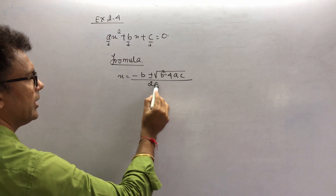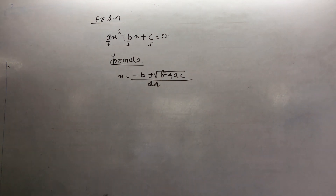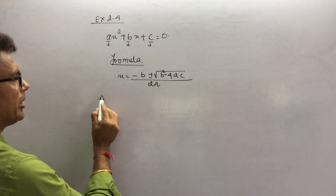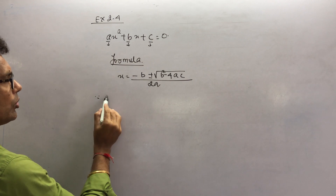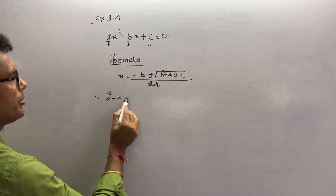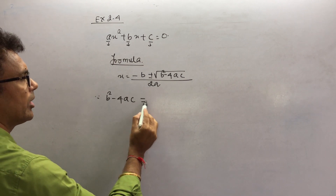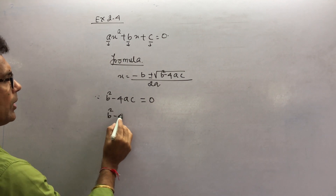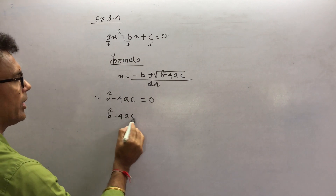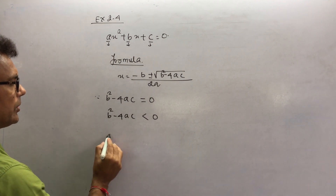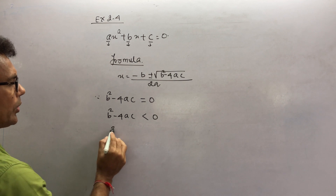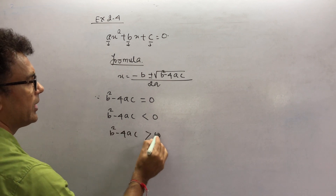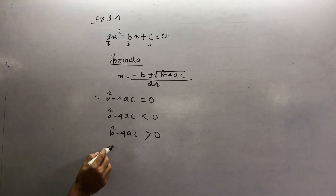The formula is: x = (−b ± √(b²−4ac)) / 2a. Everything depends on the value of b²−4ac. There are three cases: b²−4ac = 0, b²−4ac < 0, or b²−4ac > 0. These are your discriminants.